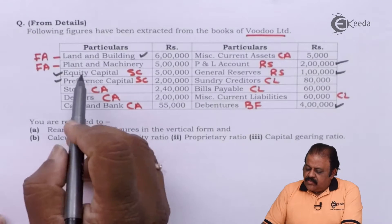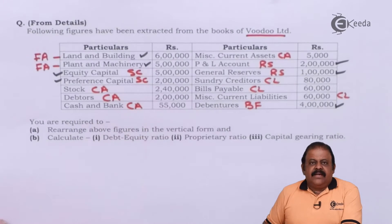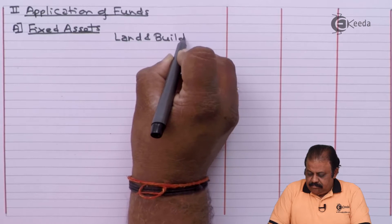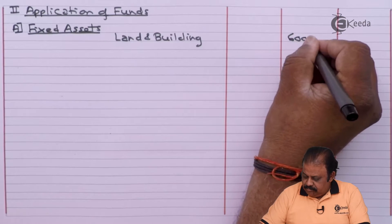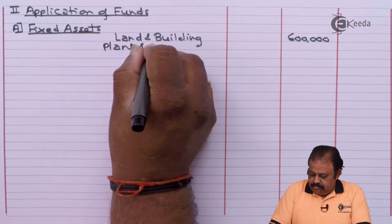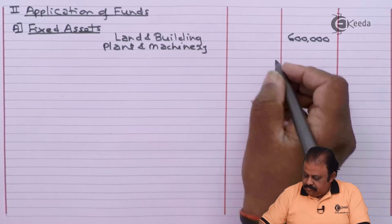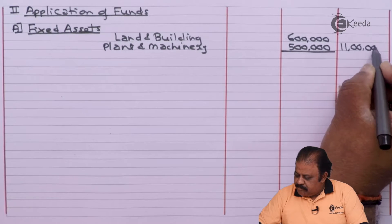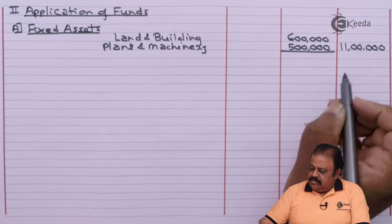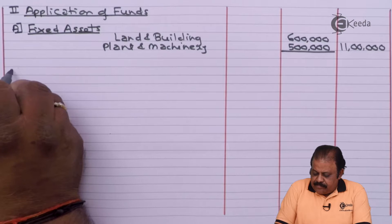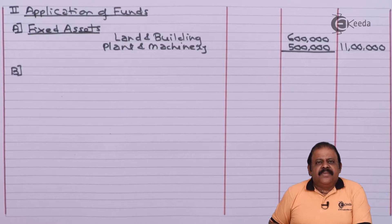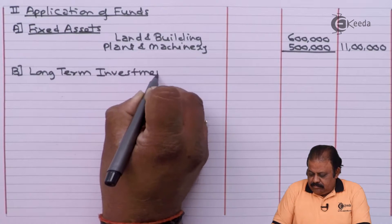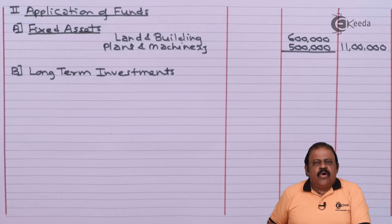In the application of funds, under fixed assets we have land and building 6 lakhs and plant and machinery 5 lakhs, giving total fixed assets of 11 lakhs. Next comes long-term investments, but in this question there are no long-term investments.